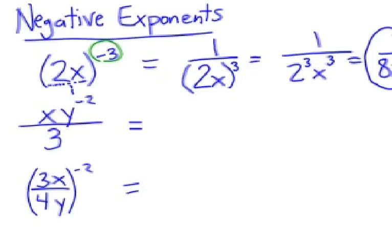So negative power puts the subject of the power in a different place in the fraction. Now, in the second example, only the y is to the negative 2 power. So the way you would rewrite this expression, x would stay on the top, 3 would stay on the bottom.